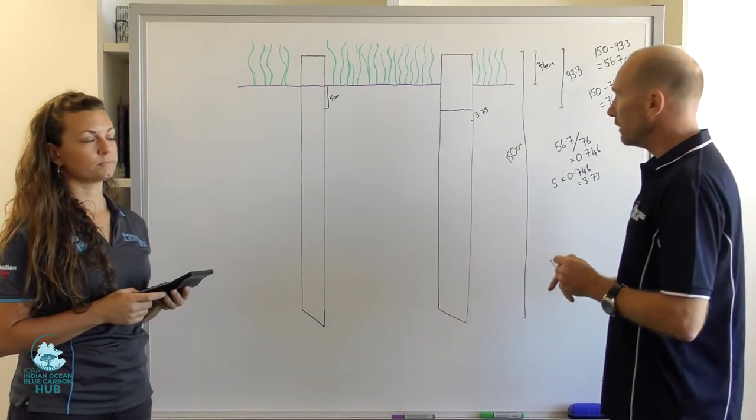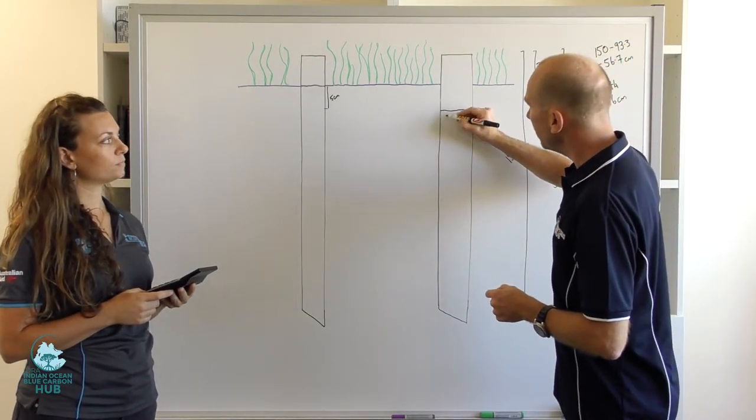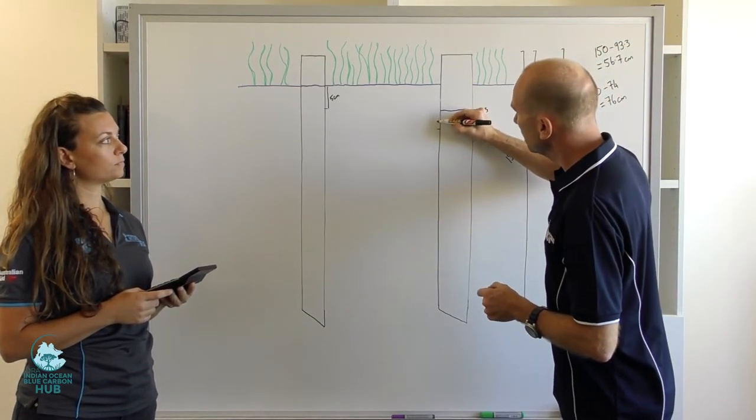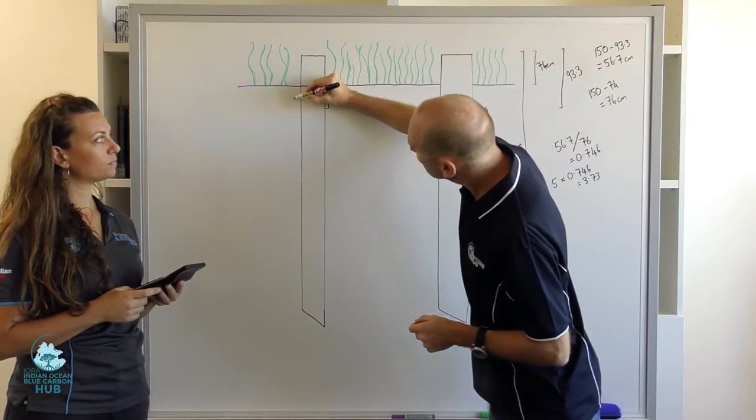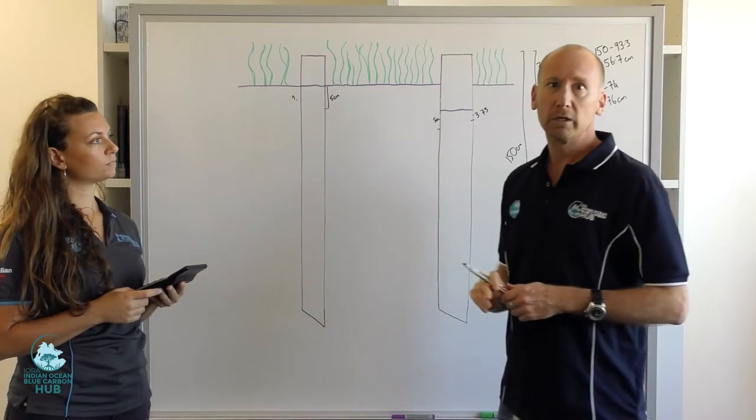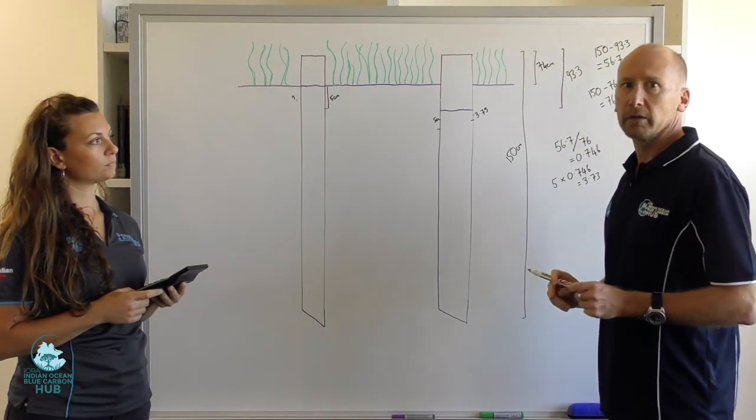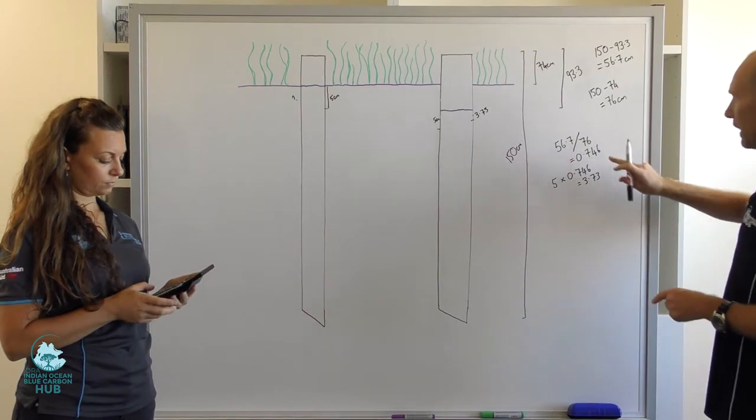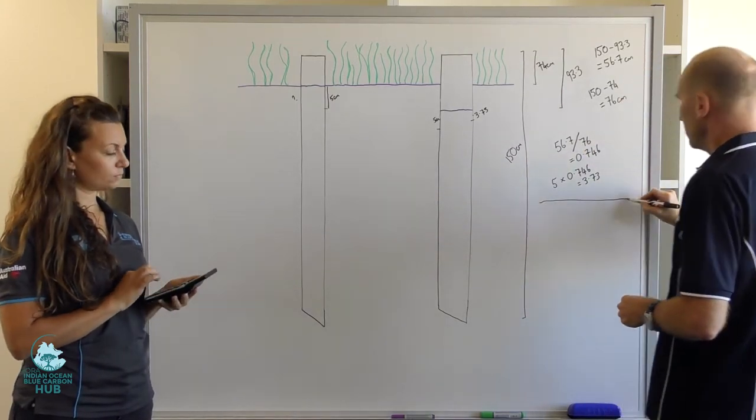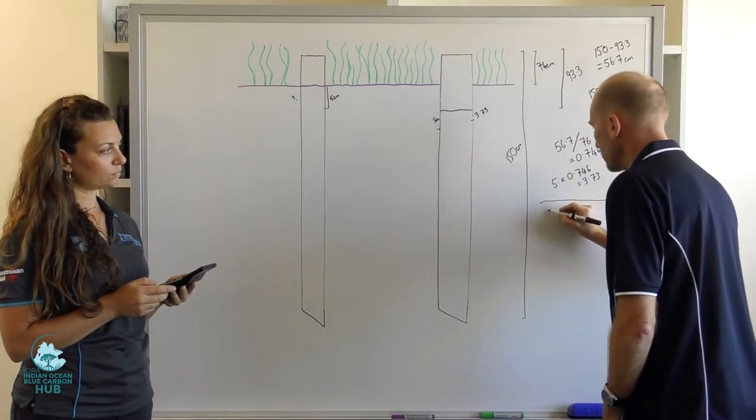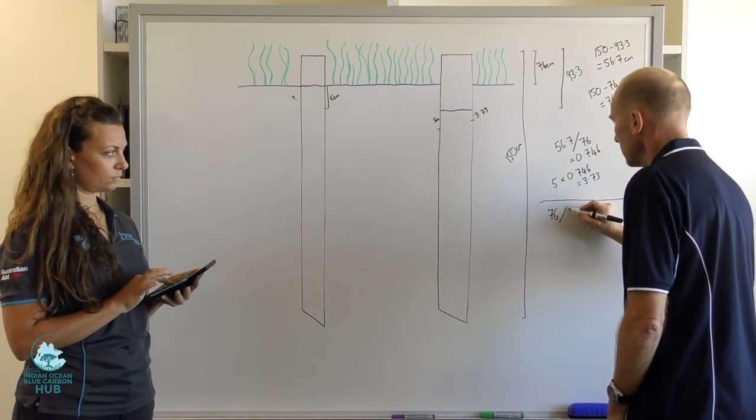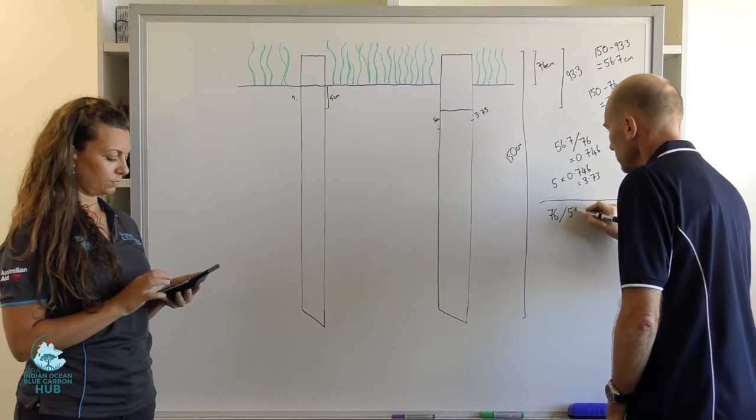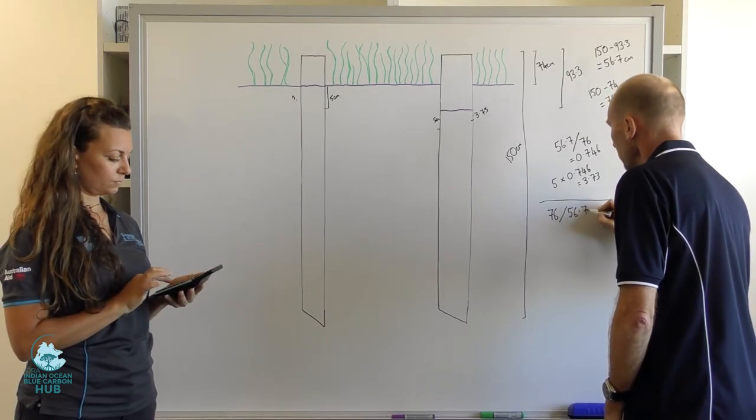Conversely, if we wanted to take a 5 centimeter slice of our compressed core, what would be the equivalent length in the uncompressed core? To do that is simply reversing our equation. So in this case, 76 divided by 56.7 is 1.34.